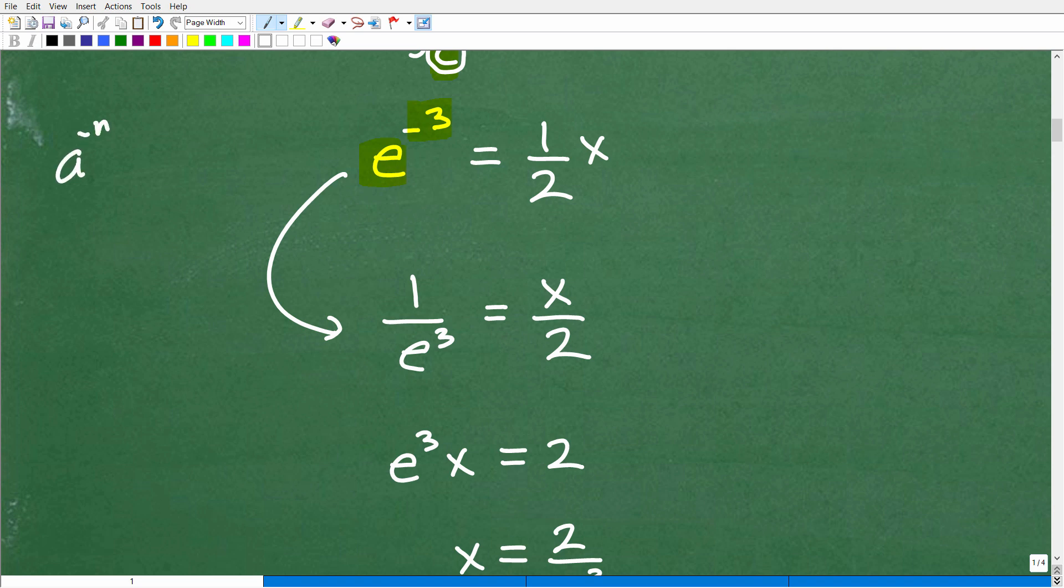Things like this. a to the negative n is equal to 1 over a to the n. So hopefully this is just good, old-fashioned algebra review for you. But e to the negative 3 is equal to 1 over e cubed.